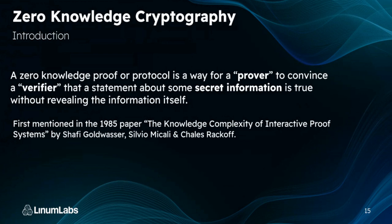Now we can look at zero knowledge cryptography. A zero knowledge proof or protocol is a way for a prover to convince a verifier that some statement about some secret information is true without revealing the information itself. So I could prove I know my password without entering my password — if you get hacked, you don't have my password, you just know that I know it. Zero knowledge cryptography was first mentioned in the 1985 paper 'The Knowledge Complexity of Interactive Proof Systems' by Shafi Goldwasser and her colleagues.